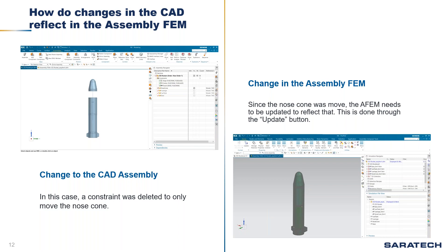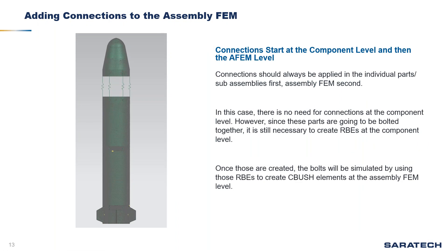Once that's done, you go back into the assembly FEM and notice that nothing has been updated yet — the nose cone is still in its original position. But if you look at the top left corner of the image, you'll see that the Update button is no longer grayed out. You select the Update button and the nose cone moves up, as shown in the image.